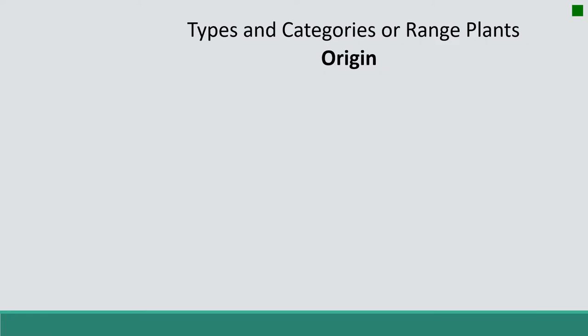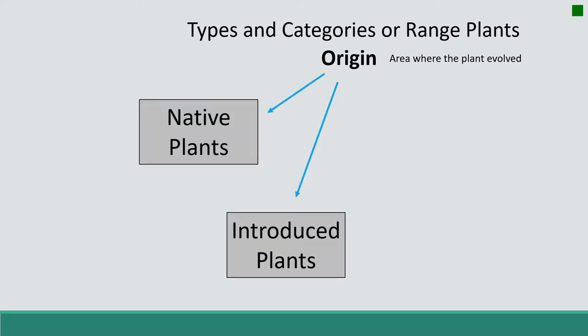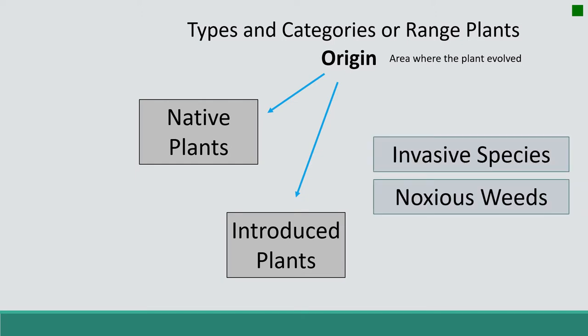I want to start by talking about origin. When we think about the word origin we're referring to areas where plants have evolved. We say we have native plants and we have introduced plants. Native plants have typically originated in North America, while introduced plants are plants that were intentionally or accidentally brought to North America. Within these two categories we also have invasive species and noxious weeds that we'll be talking about today.